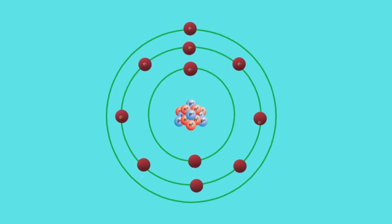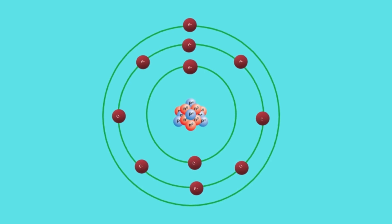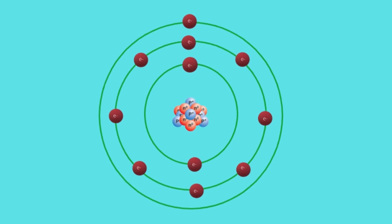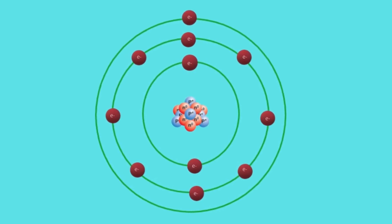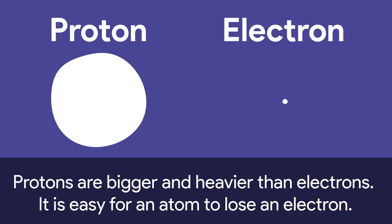Let's consider a sodium atom. See the larger circles in the middle? Those are protons. See the smaller circles on the outside? Those are electrons. It's very hard to know the exact sizes of these subatomic particles.